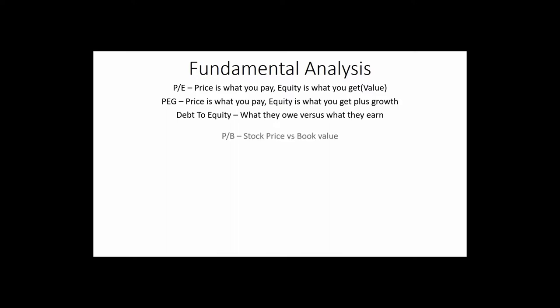The price-to-book ratio — you take your stock price versus the book value of the business. The issue with book value is it's kind of like your car: if you go to the blue book value of what your car might be worth, that's also subjective. So price-to-book is a metric we can use to determine what we're paying for the book value of the company, but the reality is it's also subjective and we have to keep that in mind.